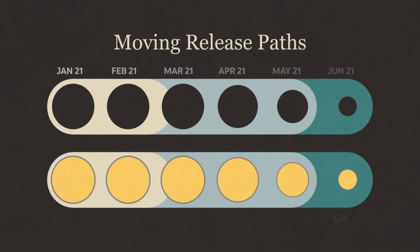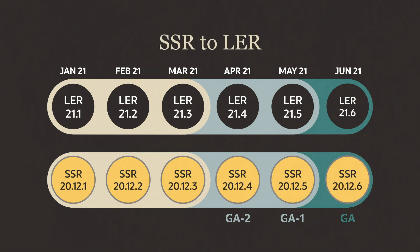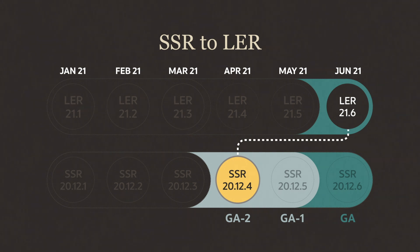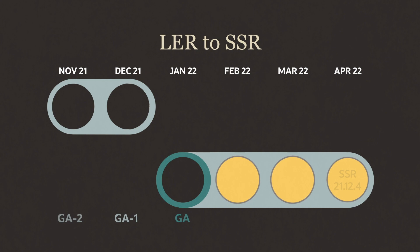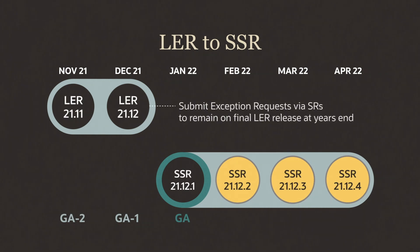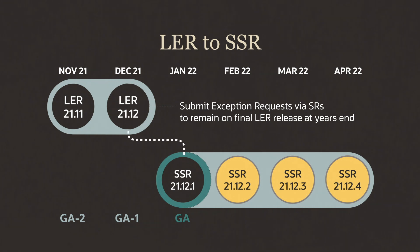Customers can also move between release paths. For customers that want to move from SSR to LER, you can request to move to LER any time of the year, as long as your two releases are behind the current LER version — this is how we make sure you don't miss any fixes. To move from LER to SSR path, you can ask for an exception to remain on the final release at year end and move to the SSR path for the upcoming year. You cannot move to SSR prior to the final calendar year release.